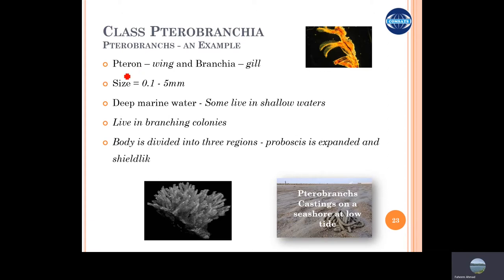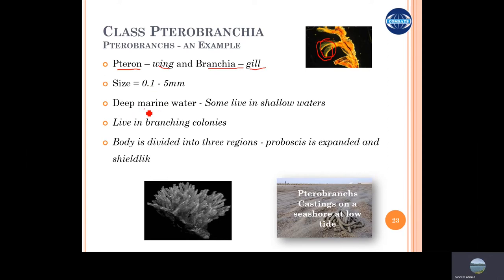Their name has two words: 'pteron' means wings and 'branchia' means gills. So their gills are basically wing-like, feather-like structures. They are very minute in size, 0.1 to 5 millimeters, and live in deep marine water, sometimes in shallow waters as well.